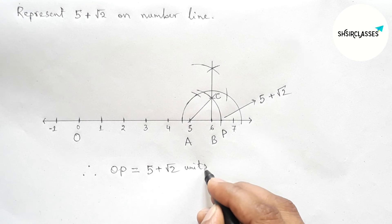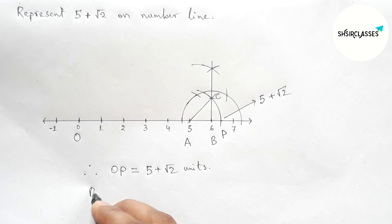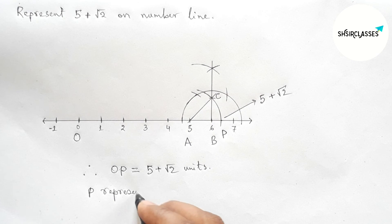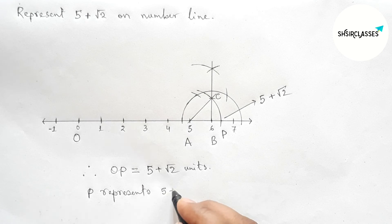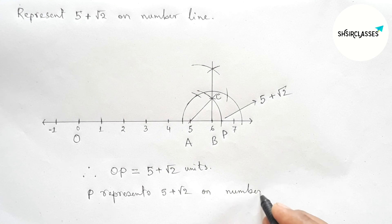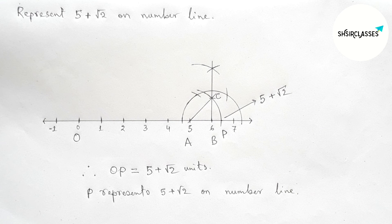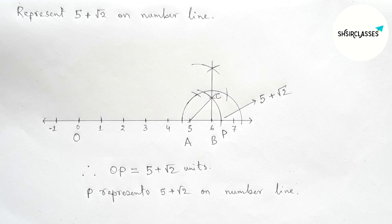And P represents 5 plus root 2 on number line. So by this way you can represent 5 plus root 2 on number line. That's all, thanks for watching.